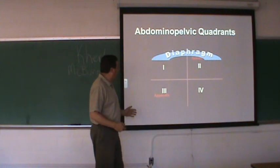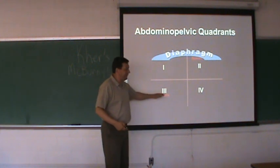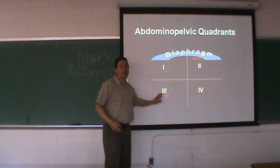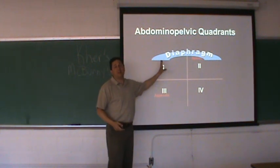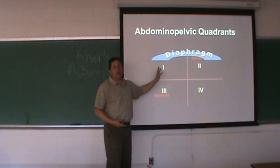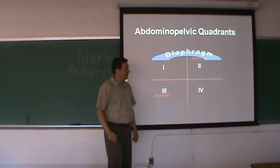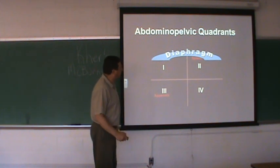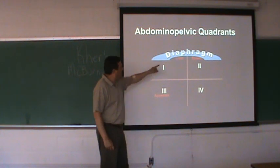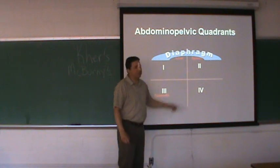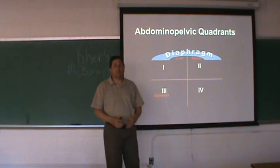If someone has lower right quadrant pain over McBurney's point, an elevated temperature, and hasn't been feeling well, they need to go to the emergency room immediately. You do not want a ruptured appendix because then all that bacterial infection gets out into the gut and that whole area has to be cleaned out.